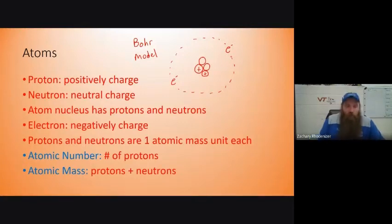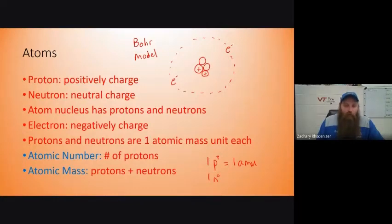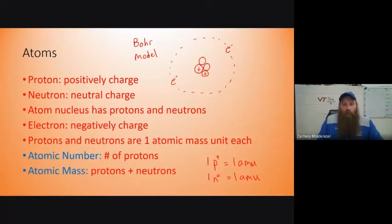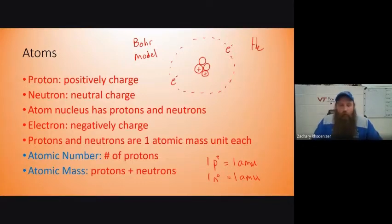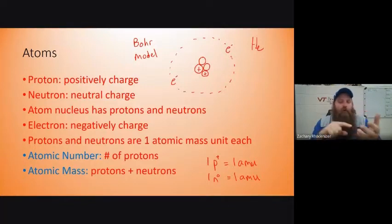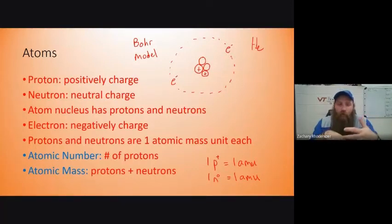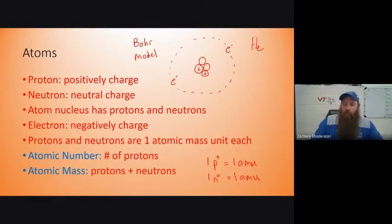The atomic mass is based on how many protons and neutrons there are. A proton — abbreviated P+ — is one AMU, one atomic mass unit. A neutron, which is N0 (neutron starts with N, has zero charge), is also one AMU. Looking at helium (He), we'd expect it to have a mass around 4 AMU because electrons are so small they don't really have a mass — we don't calculate it. Basically, the mass of an atom comes from its protons and its neutrons.